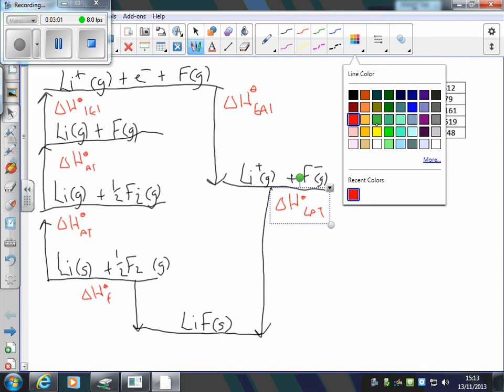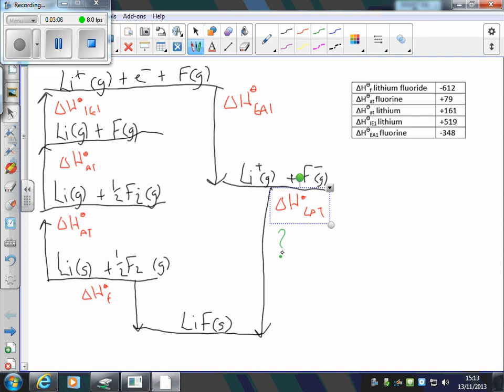The next step is to put the numbers on the line. Lattice enthalpy is the one that I don't know. Electron affinity from the table is minus 348. Ionization energy is plus 519. Atomization of fluorine is plus 79. Atomization of lithium is plus 161. And formation is minus 612.